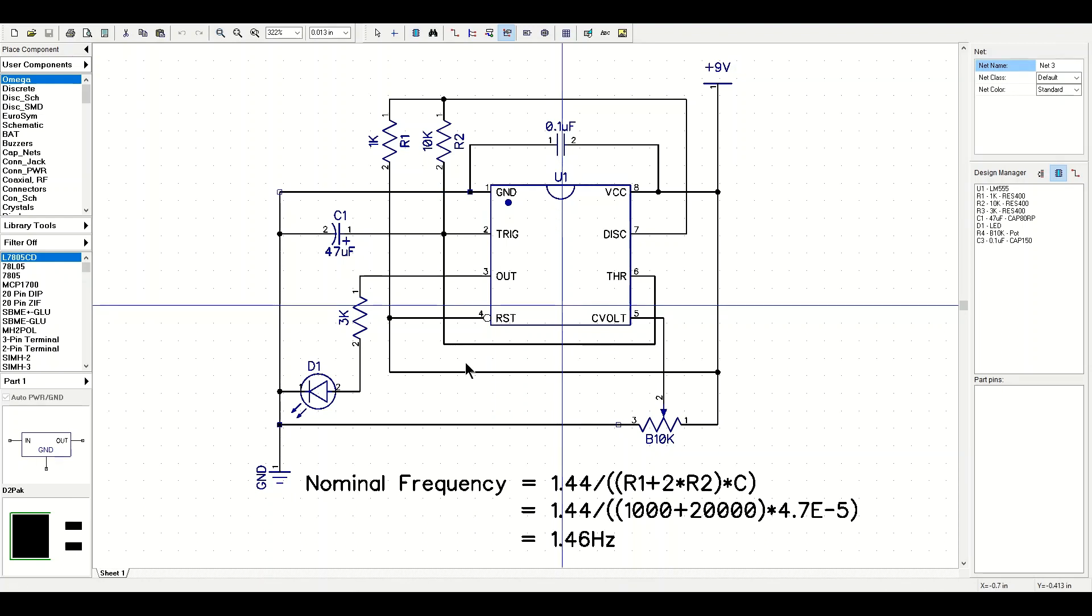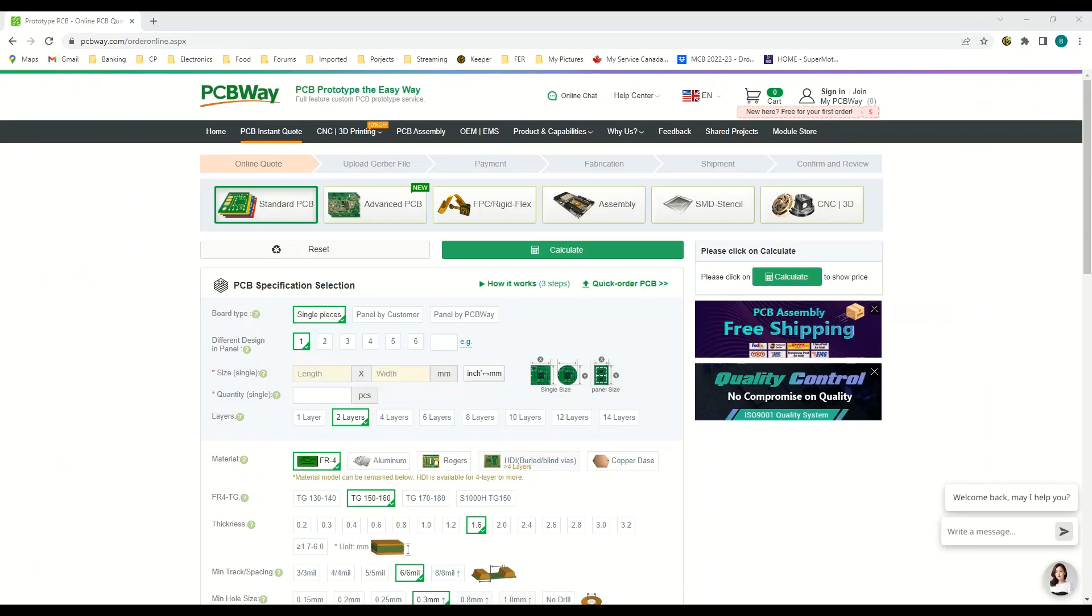In part two, we're going to combine the two circuits together to produce a fun little toy. So PCBWay have offered to help us out with this project. They're going to provide us with some nice circuit boards. So when we get to part two of the video, and we combine the two circuits together, we're going to do a layout. And I'll take you through then ordering PCBs from PCBWay. It's so easy. So anyway, let's get down to the lab and get started on this project.